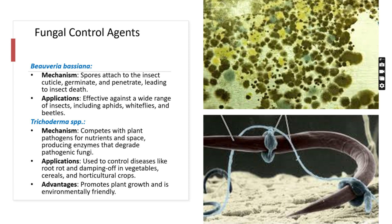Beauveria bassiana is particularly effective against pests such as aphids, whiteflies, and beetles. Trichoderma spp. works differently by competing with plant pathogens for nutrients and space, and also produces enzymes that break down pathogenic fungi.